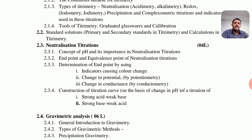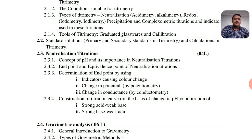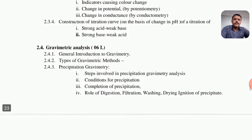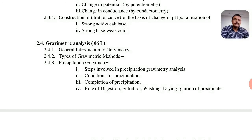Topic 2.3 is neutralization titration, covering the concept of pH and its importance, the end point and equivalence point, and determination of the end point using indicators causing color change, change in potential by potentiometry, and change by conductance by conductometry. Strong acid-weak acid titrations and strong base-weak acid titrations are also covered. Topic 2.4 is gravimetric analysis. Gravimetry is very important in the mineral industry and inorganic chemistry. It covers precipitation gravimetry, the steps involved, conditions for precipitation, completion of precipitation, the role of digestion, filtration, washing, drying, ignition, and the final precipitate.